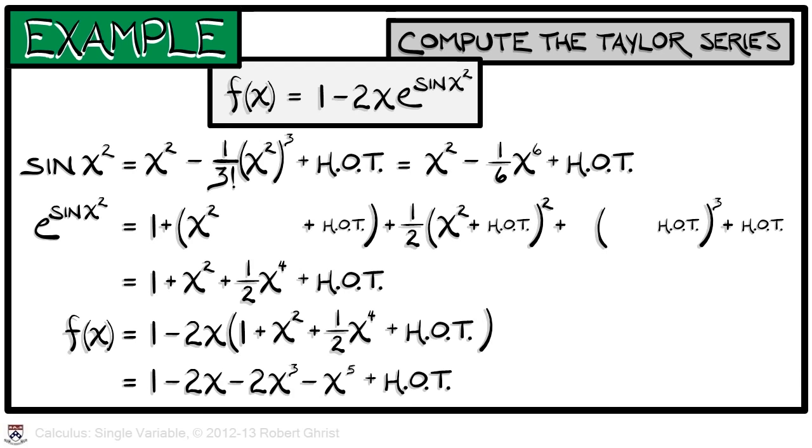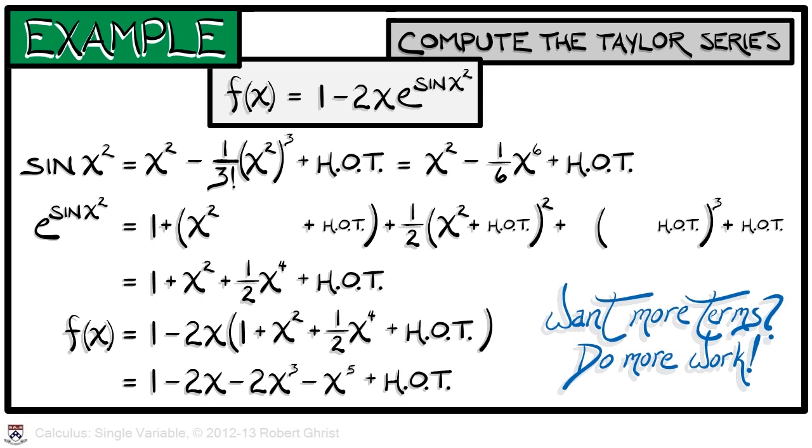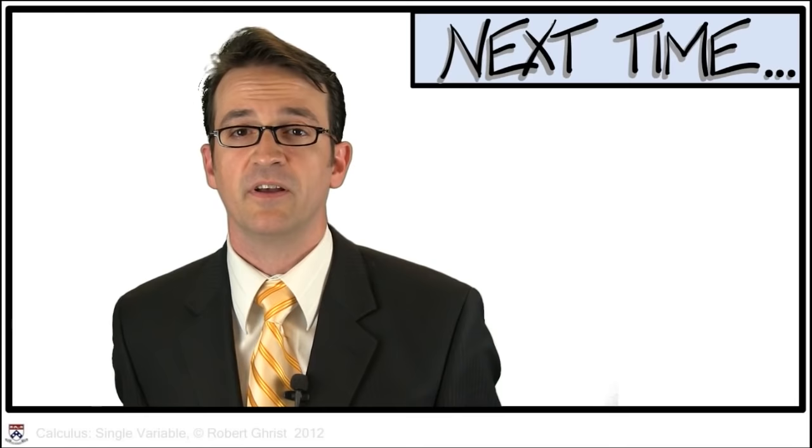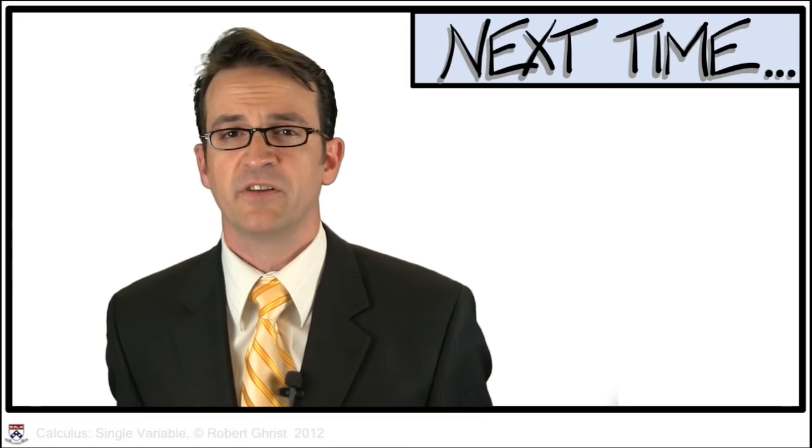We've now learned not only what Taylor Series are, but how to compute them quickly and cleanly. Along the way, we've been introduced to two new characters: the hyperbolic sine and cosine. In our next lesson, we're going to consider what happens when things don't work out so well — we'll deal with issues of convergence. We'll see you next time.